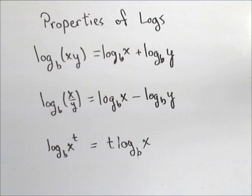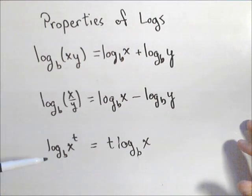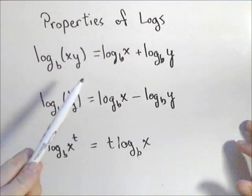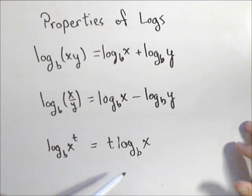In this video, we're going to look at simplifying a couple expressions using properties of logs. These will be the main three properties we'll be using: the product to sum, the quotient to difference, and pulling the exponent out front.